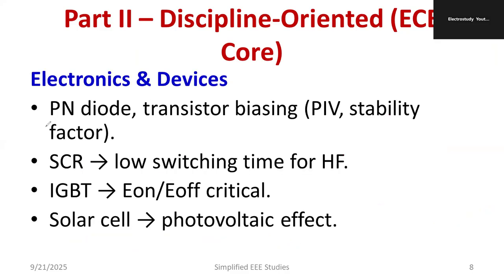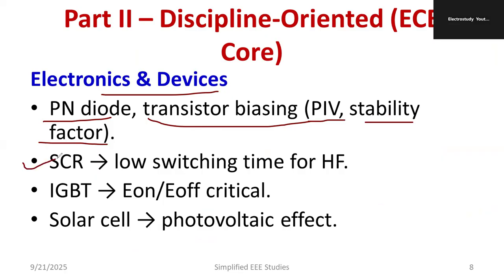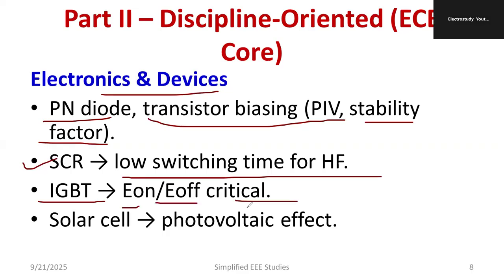For electronics and devices, study what a PN diode is and how it works at the application level. Study the importance of transistor biasing — voltage divider biasing, peak inverse voltage, and stability factor. What is SCR? It is a silicon-controlled rectifier which has low switching time for high frequency. For the insulated gate bipolar transistor (IGBT), study on period, off period, switching characteristics, and static characteristics. A solar cell works based on the photovoltaic effect.